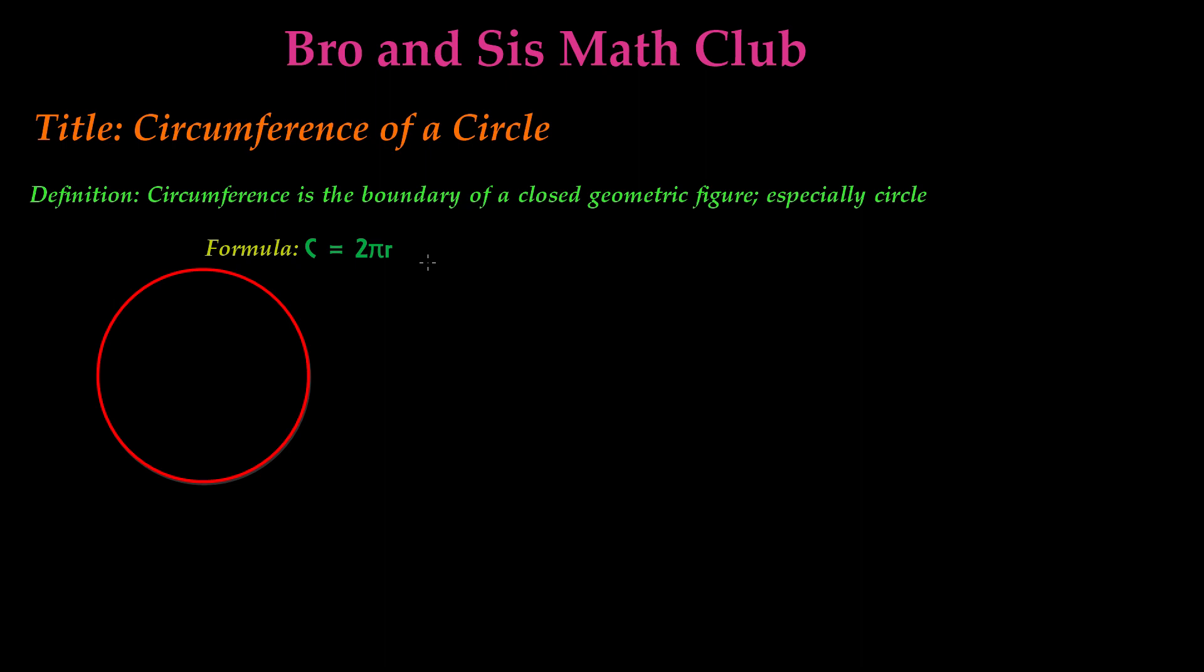So what exactly is a boundary of a closed geometric figure? A boundary is just the outer outline of a geometric figure, but in this case we are looking at a circle. So this is the boundary of this circle, which is outlined in red.